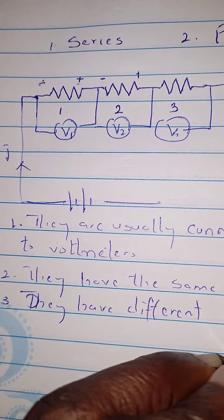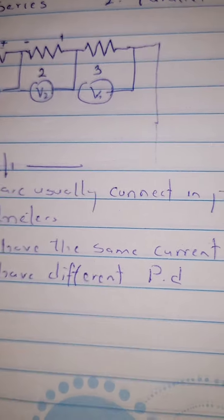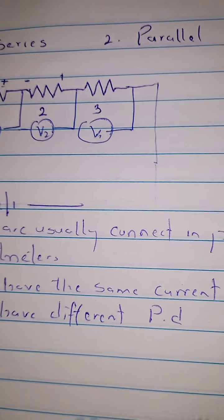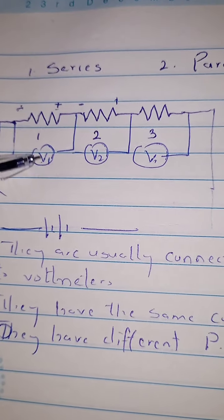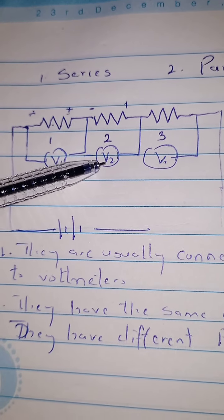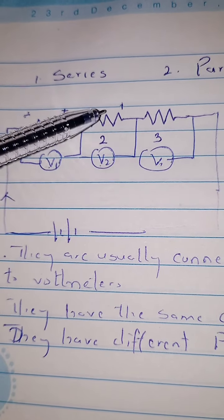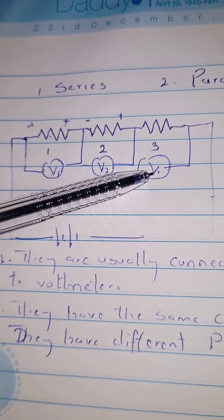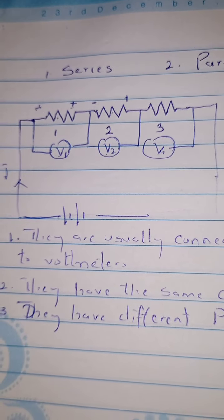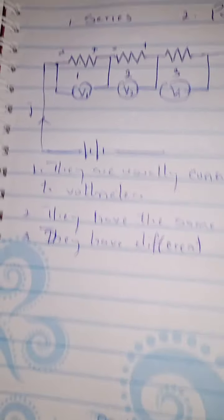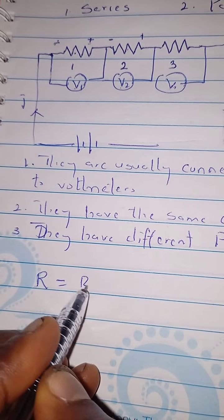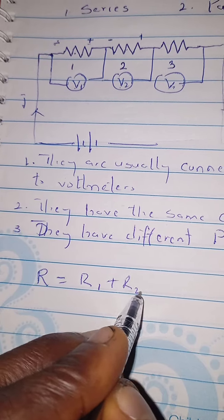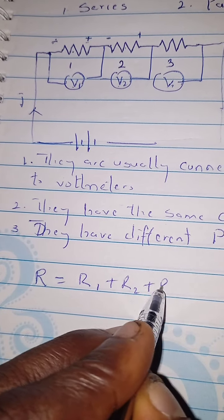However, they have different potential differences. The potential difference V1 of resistor one is different from the potential difference V2 of resistor two, and V3 of resistor three. The resultant resistance is given by: R = R1 + R2 + R3.